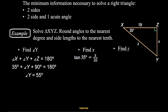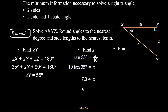To solve for x, I need to get rid of the 10, so I multiply both sides by 10, and x equals 10 times the tangent of 35. Now it's a calculator problem — plug in tangent of 35 degrees, hit enter, and multiply by 10, and you get approximately 7.0.